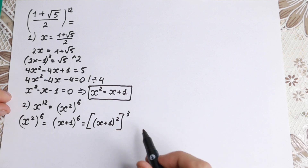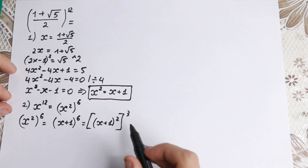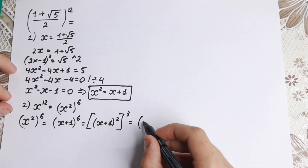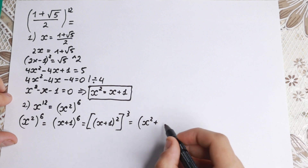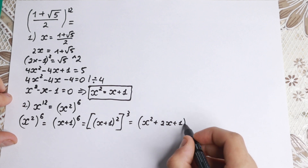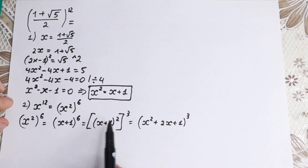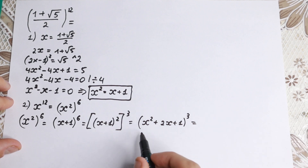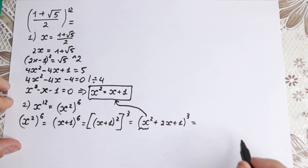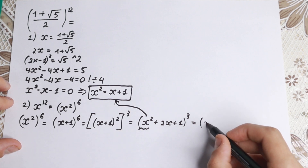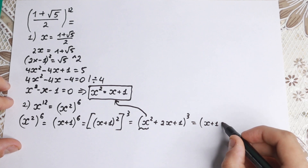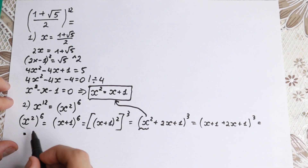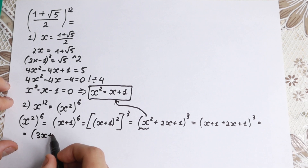Let's go step by step further toward our answer. Expanding (x plus 1)² gives x² plus 2x plus 1, all raised to the cube. Since x² equals x plus 1, we substitute: (x plus 1) plus 2x plus 1 raised to the third power, which simplifies to (3x plus 2)³.